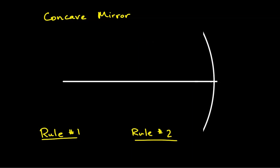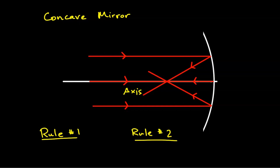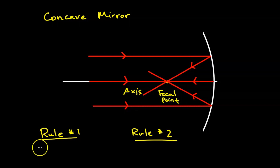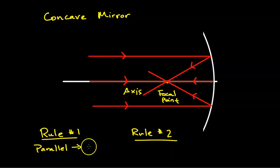We're going to shine three beams of light parallel to what we call the optical axis. This line right here is called the optical axis. We're going to shine three beams of light, and notice how they bounce off the mirror — they all reflect back towards this one point, which is called the focal point. Our first rule is: if a light ray is parallel to the optical axis, then it's going to reflect back through the focal point.